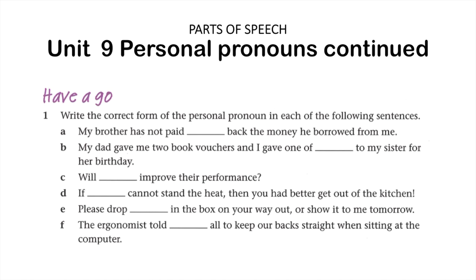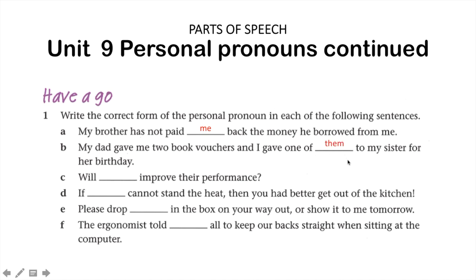Activity number one: write the correct form of the pronoun in each of the following sentences. For sentence A, 'My brother has not paid back the money he borrowed from me' — we want a pronoun that describes the speaker, so we would use 'me.' For sentence B, 'My dad gave me two book vouchers and I gave one of them to my sister for her birthday' — we're referring to the vouchers, so we need a pronoun that refers to them: 'them.'